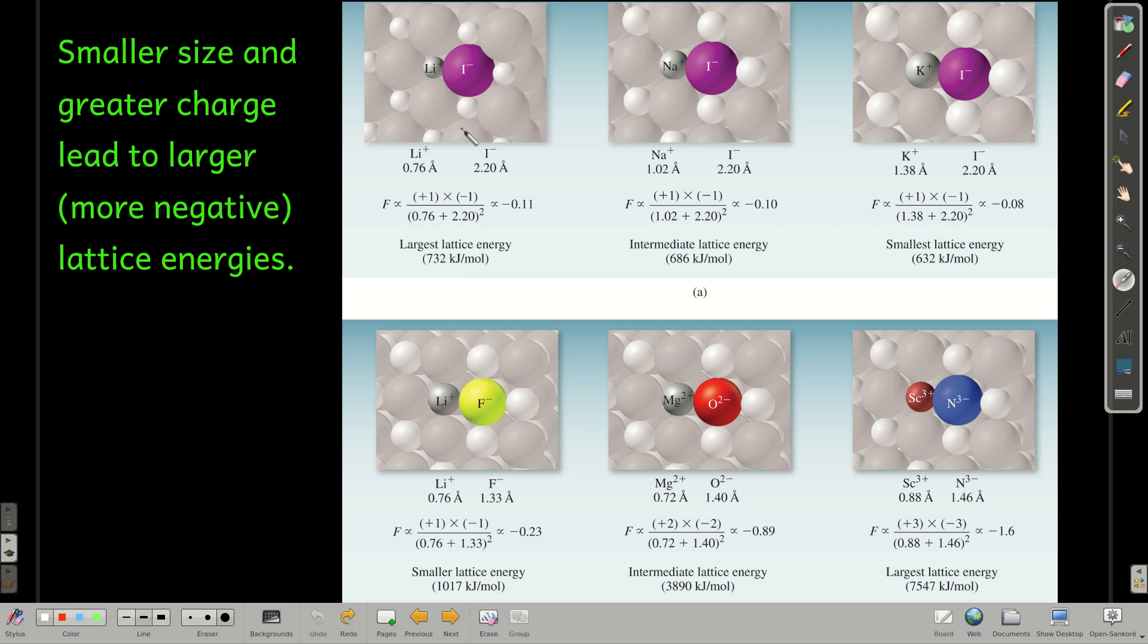And so if we compare these three ionic compounds, lithium iodide, sodium iodide, and potassium iodide, the iodide is staying the same. What's changing is the cation: lithium, sodium, and potassium. They get bigger as you go from left to right.